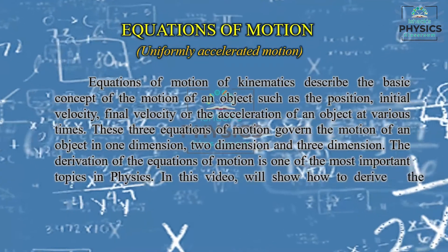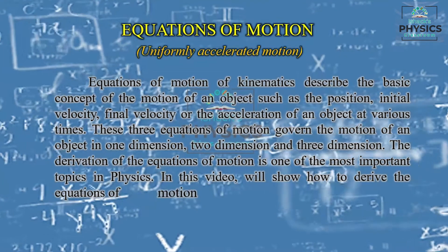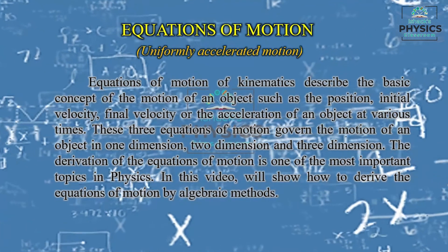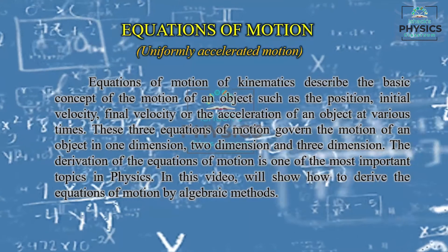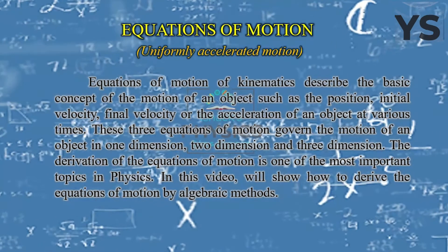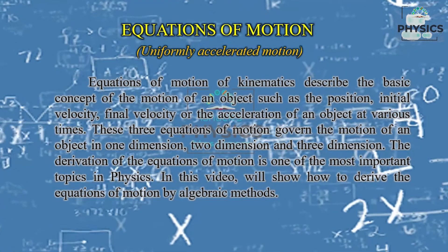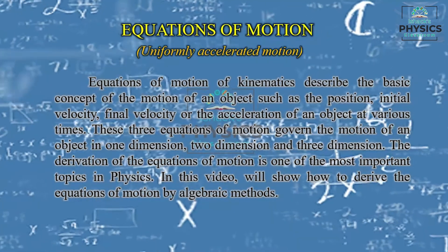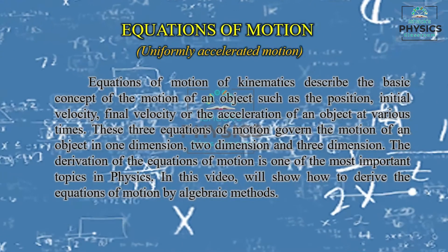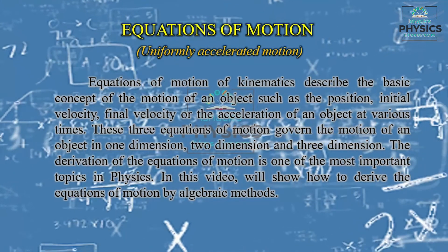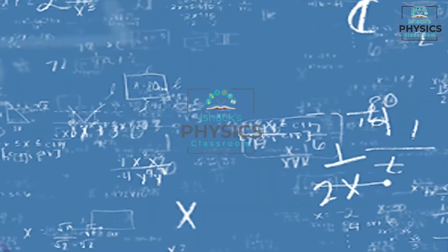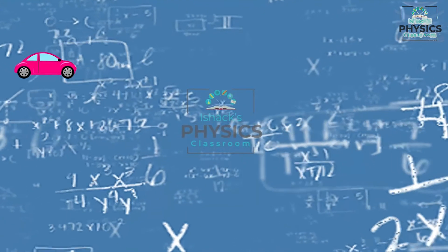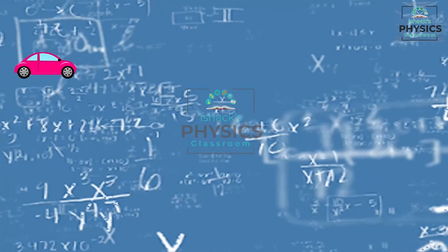In this video, we will show how to derive the equations of motion by algebraic methods. In the third class, we have three fundamental equations. The equations of motion are a special type of problem. We will discuss the fourth equation as well. The basic variables are: u is initial velocity, v is final velocity, t is time, s is displacement, and a is acceleration.